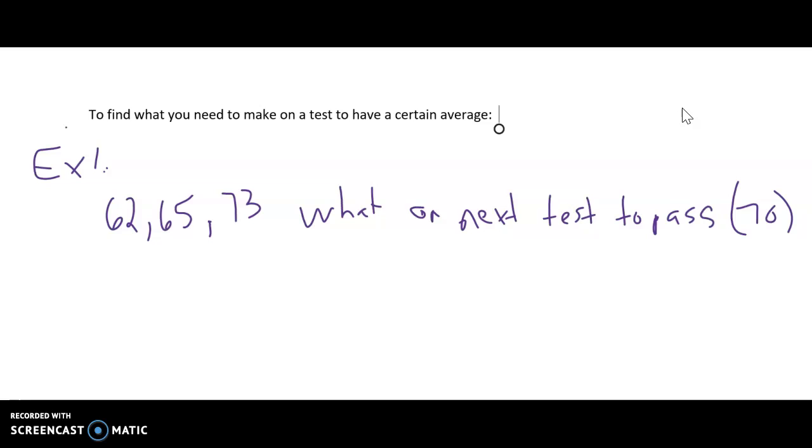Okay, so you're going to set up an equation. What you usually do is you would take your 62 plus your 65 plus your 73 plus whatever test score you have. You're going to divide it by 4 and that has to be 70. So that's the equation that you set up because you know what you want your average to be. You just don't know what this test score is right here.